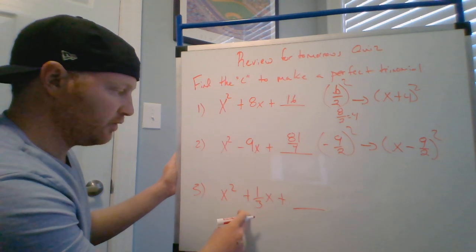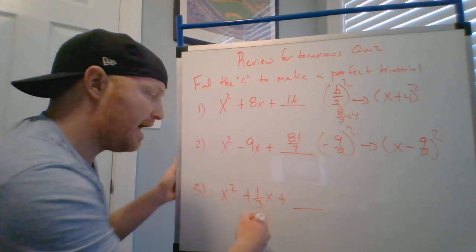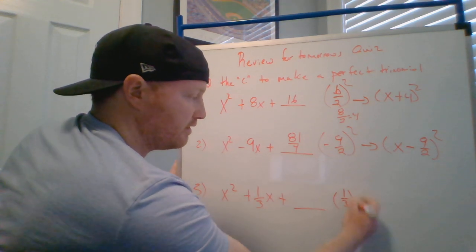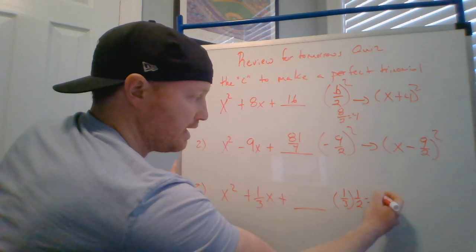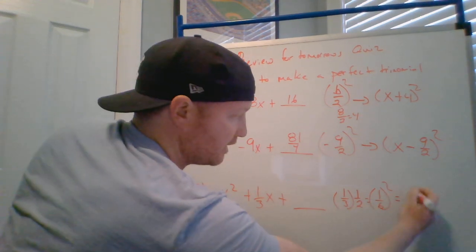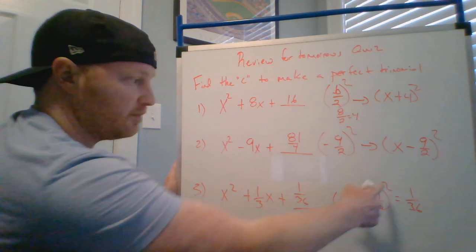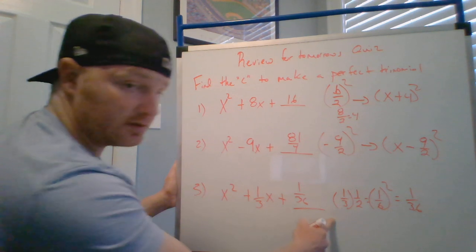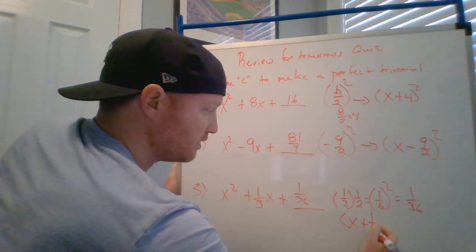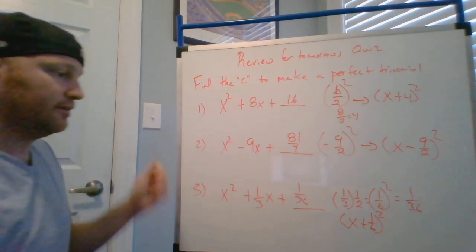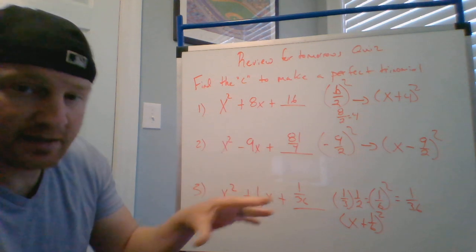Next one, this one right here, half of 1/3. Now because I got a fraction, I want you guys to use your common sense with fractions. Half of 1/3 is the same as 1/3 times 1/2, which equals 1/6. And when you square that answer, you get 1/36. So this is 1/36 right there because you just square the power to the top and the bottom. So your perfect trinomial is going to be x, this one's plus, so this one's plus 1/6 squared.